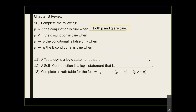For the AND statement, as long as you see a false, the result is false. For the OR statement, if either one of them is true then the whole statement is true — as long as there's a T, the result is true.